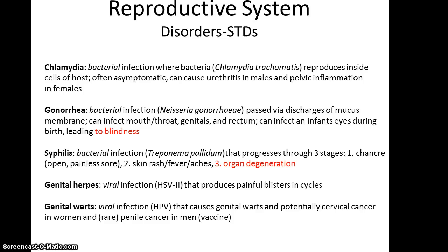Other disorders in the reproductive system include STDs. Bacterial infections such as chlamydia, gonorrhea, and syphilis can be treated by antibiotics. Gonorrhea can lead to blindness in infants born to infected mothers, and syphilis can lead to insanity and death. There are also viral infections such as genital herpes, which produces painful blisters, and genital warts, which are linked to many cases of cervical cancer in women and rare cases of penile cancer in men. Fortunately, there is now a vaccine for genital warts, which should reduce cervical cancer cases.